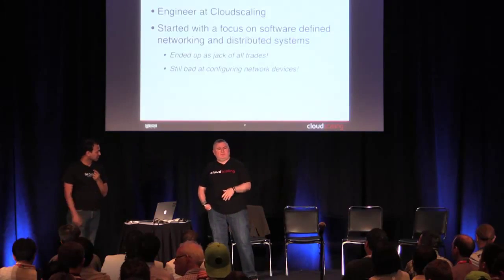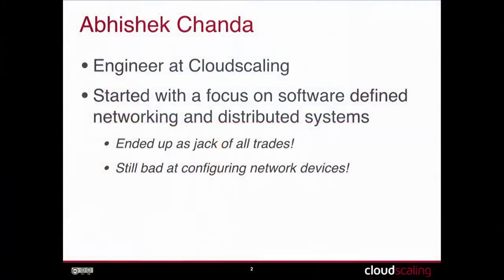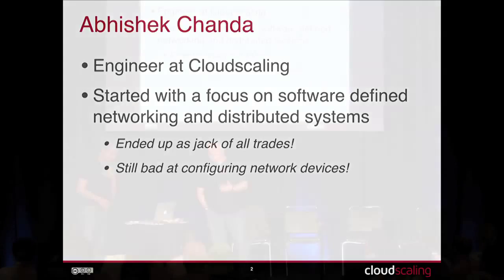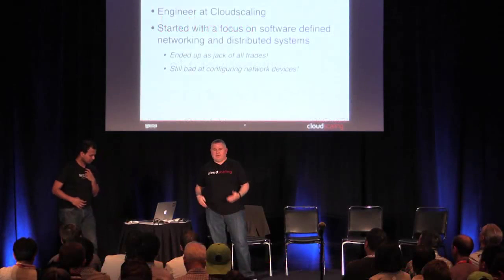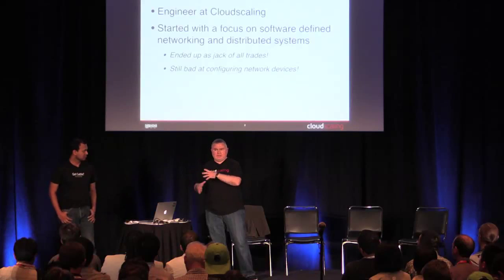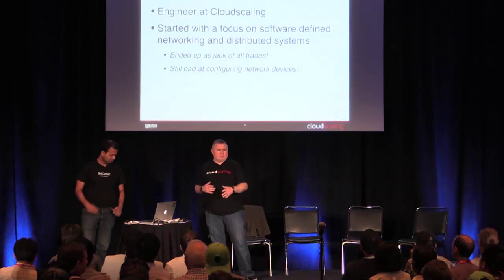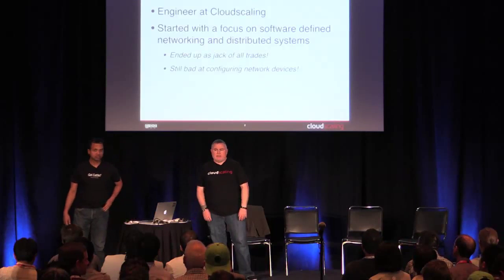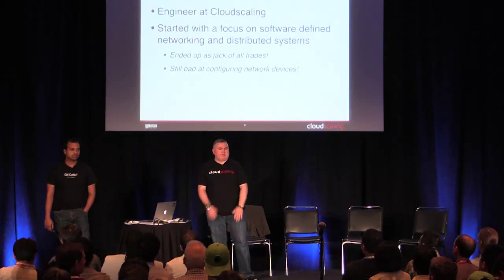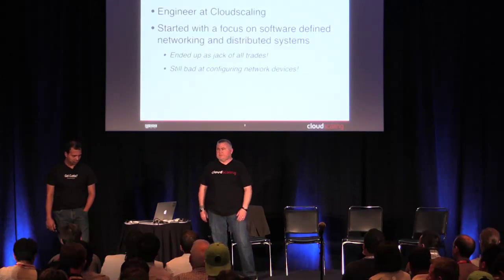I'm Randy Bias. I'm the CEO and founder of Cloud Scaling. I am, or have been in the past, a hands-on router jock in building ISPs and large-scale data centers. I'm just here to help Abhishek out. He's more the SDN software side of the networking part, and I'm representing our network architecture team, which is about three or four people strong.